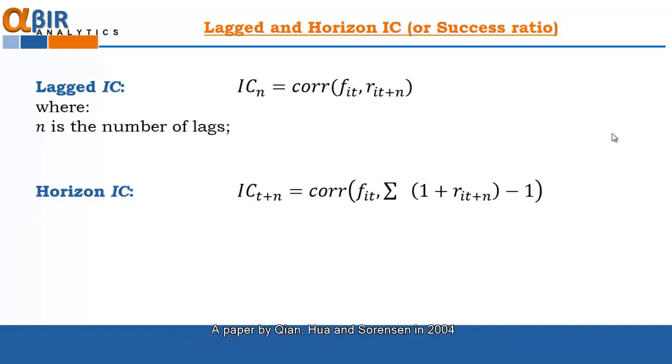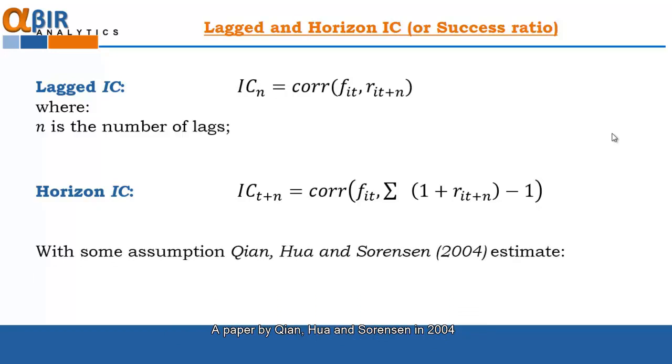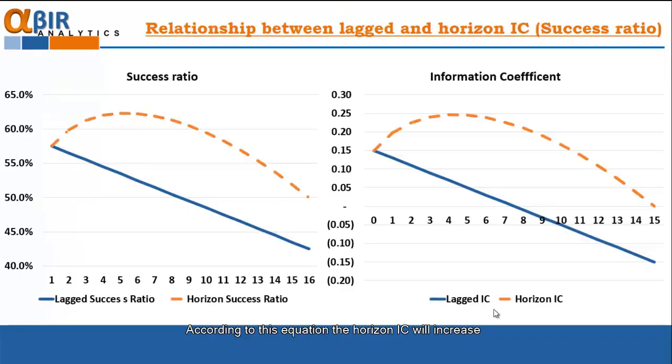A paper by Chin, Hua and Sorensen in 2004 showed the relationship between the horizon IC and the lagged IC under some assumptions. According to this equation, the horizon IC will increase as we lengthen our investment horizon or increase the lags in the lagged IC. Although the lagged IC is decreasing, the accumulation of positive information will drive the success ratio up.